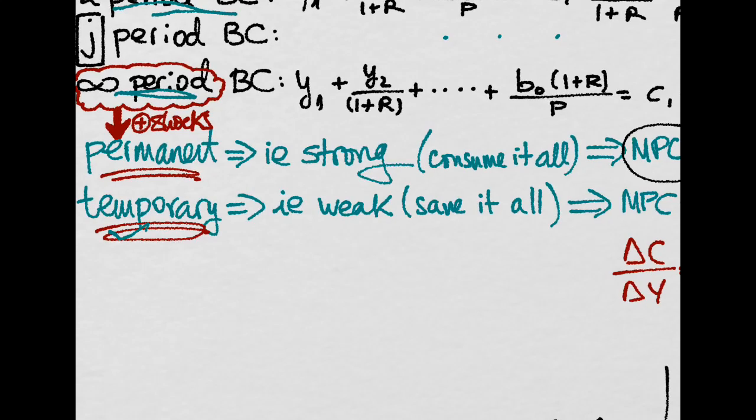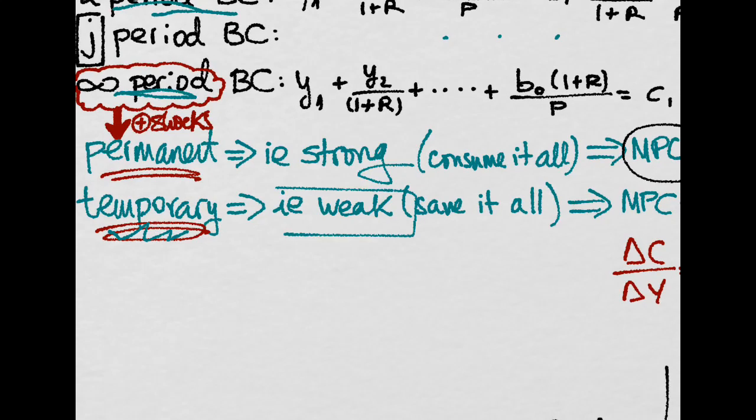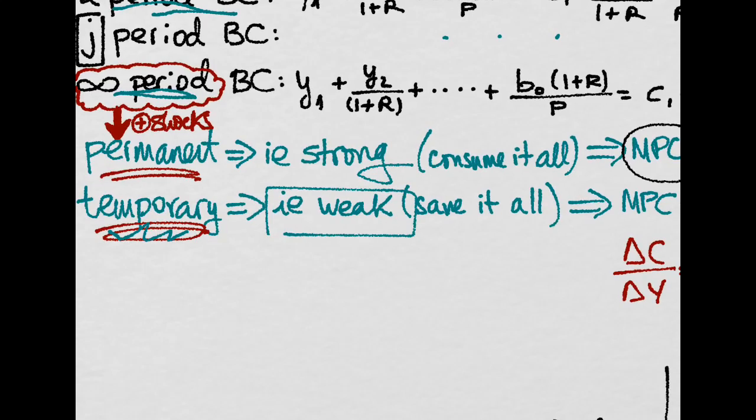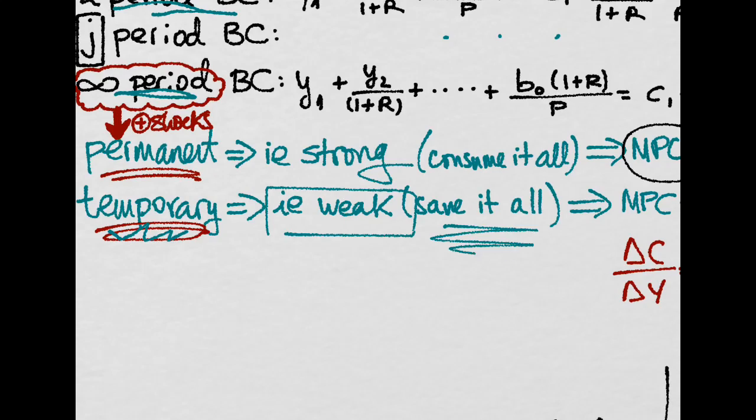But instead, if it was temporary, then the income effect will be weak. That is, you save it all. You know that this boost in income is going to be for this period so next period you will still have nothing more. You have the same level of income as before so you are better off saving it for tomorrow when things get back to normal.